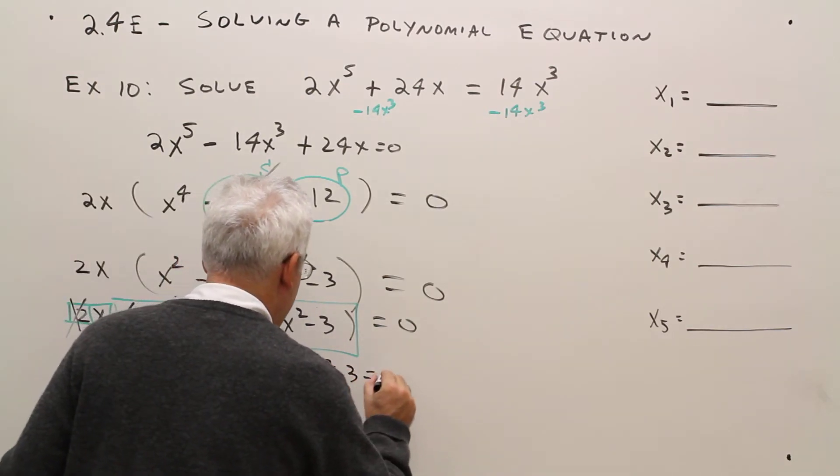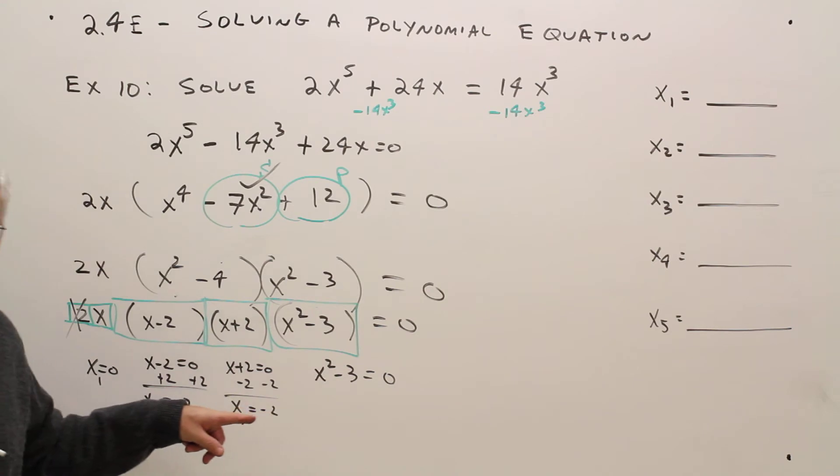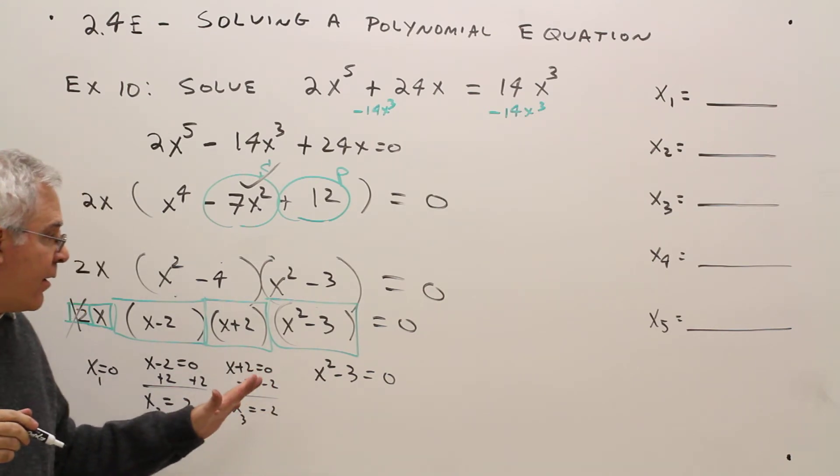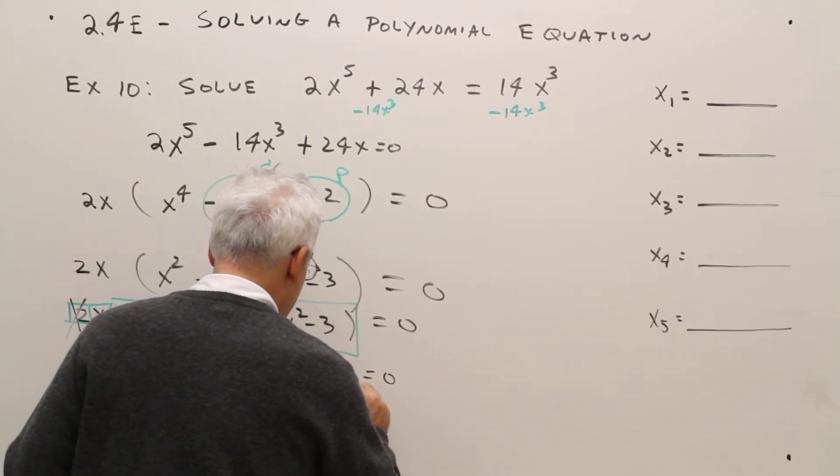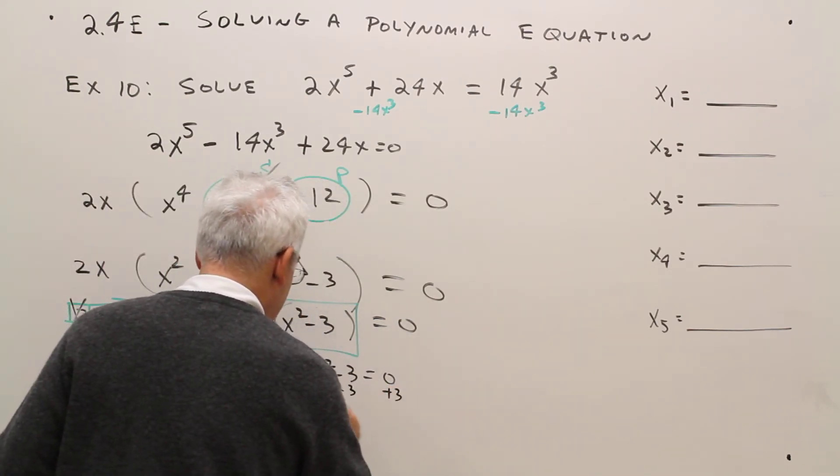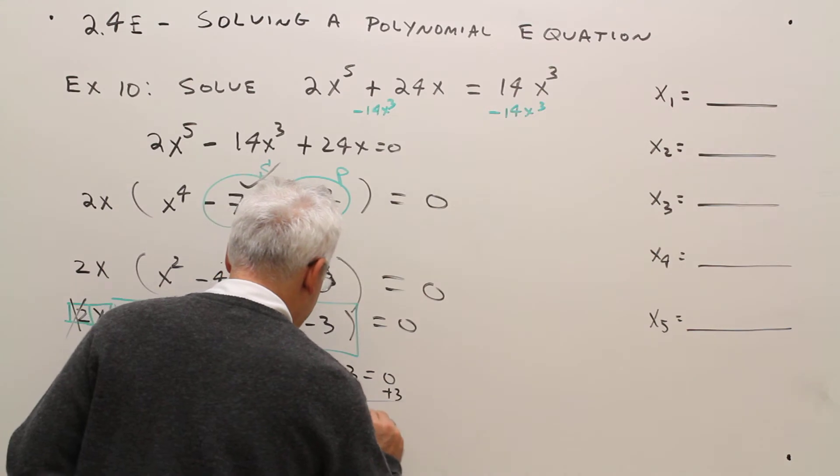And then over here, x squared minus 3 equals zero. I'll have to do a little bit of work here. So I'm going to isolate the x squared. I'm going to add 3 to each side. Plus 3, plus 3. x squared equals 3.